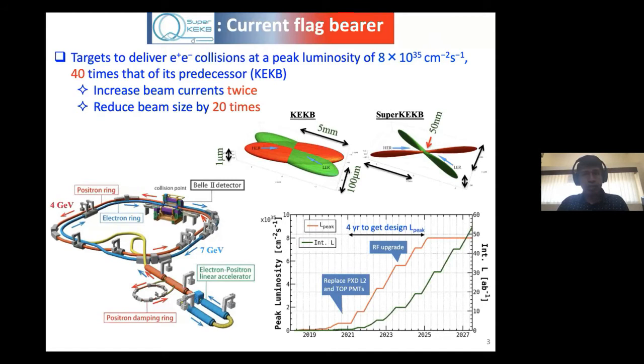Luminosity is the key for this experiment and the current flag bearer is the Super KEKB machine. Here one is planning to deliver E plus E minus collisions at a luminosity which is 40 times that of KEKB. How will one get it? Luminosity has two important terms: the beam current in the numerator, which you want to increase by two times, and in the denominator you get the beam size. There you want to squeeze to the nanometer scale that you see in the right-hand cartoon here. By doing that, you will achieve this luminosity, 8 times 10 to the 35.